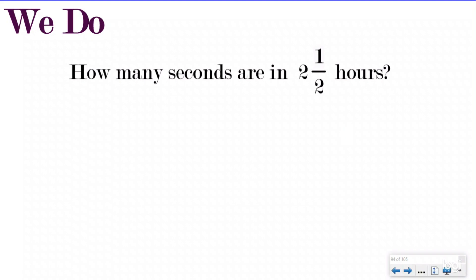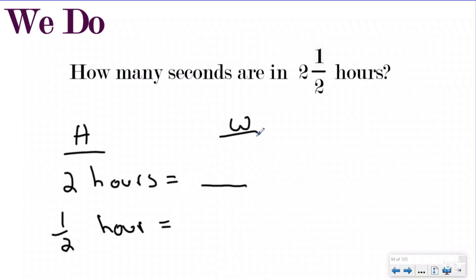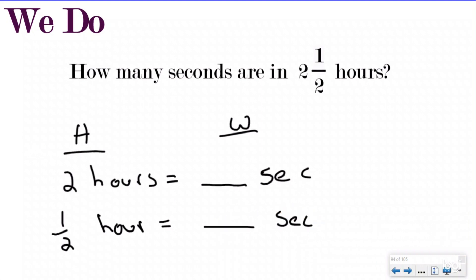Here's our 'we do' problem — let's do this one together. If you don't have your notes, you can find the link in the description so you don't have to copy everything down. We gave you guided notes. I want to know how many seconds are in two and a half hours. I have two hours, and I'm going to decompose this into my whole number and my fraction: two hours and then one-half of an hour. And I want to turn this into seconds. How many seconds are in two hours, and how many seconds would be in one-half of an hour?